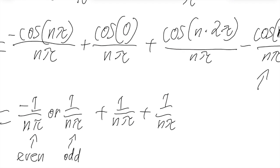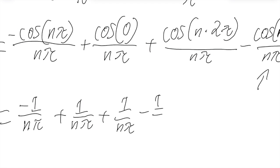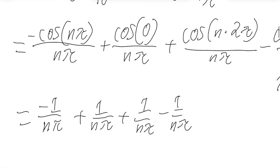So let's first consider the case of the evens. So in the case of the evens, we'll have negative 1 over nπ plus 1 over nπ plus 1 over nπ minus 1 over nπ. So you can see that these will cancel. And these will cancel, leaving 0. So in the case that it's even, b_n will equal to 0. And we can ignore that case.